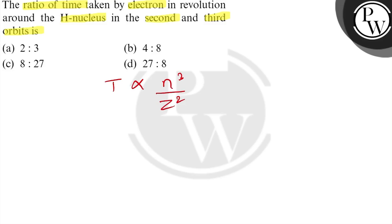Now, according to the question, we have a ratio for the hydrogen nucleus in 2nd and 3rd orbits. So our time of revolution is dependent only on n, that is the number of the orbit which we are calculating, since Z is the same.